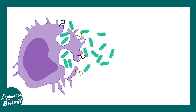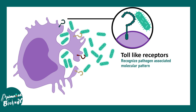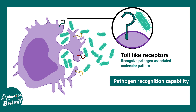How does a macrophage recognize a particular bacteria or pathogen? It turns out every bacteria or pathogen has some molecular pattern associated with it on its surface. Macrophages recognize these pathogen-associated molecular patterns via toll-like receptors, which are present on the surface of macrophages. Small components like lipid components of bacteria, DNA, or parts of the flagella can all be recognized, and macrophages can identify these as foreign substances present due to a pathogen attack.